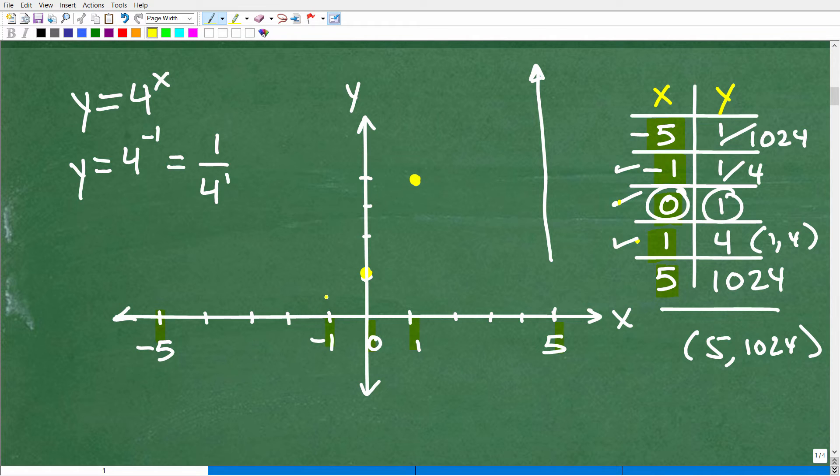So at negative 1 right here, y is equal to 1/4. So if this is 1, that's 1/2. So it might be something like right here. So that's this point right there. We have these three points. We have 1, 2, 3. Oh, actually, we have 4 points. And now let's go ahead and talk about this last point, negative 5.